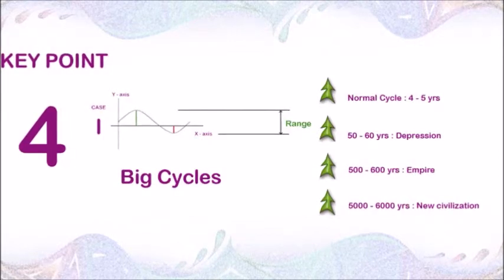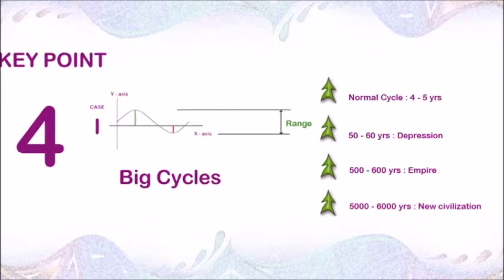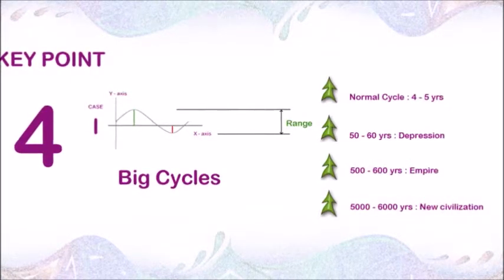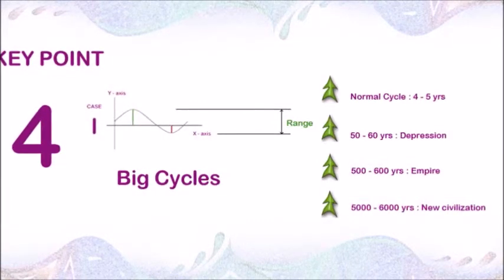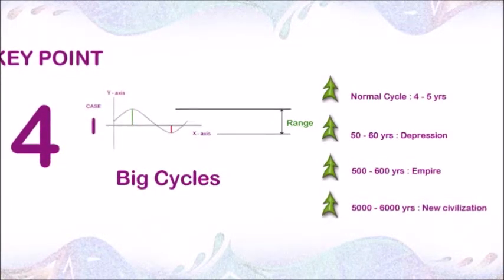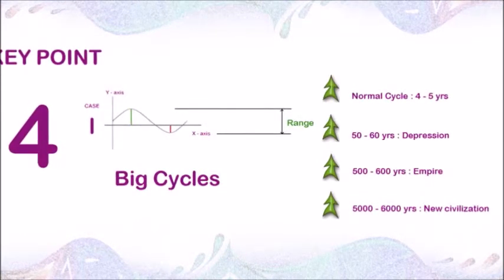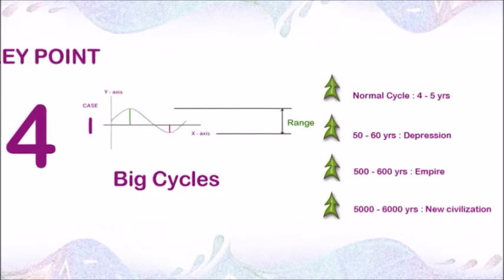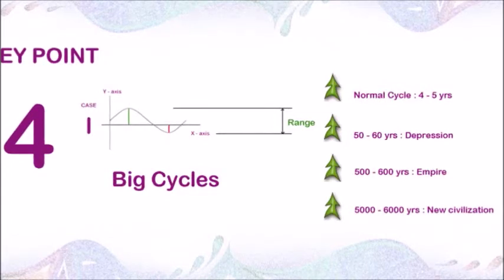Similarly, bigger business cycles give rise to far bigger cycles. Like a 60 year cycle can give rise to a cycle of 500 to 600 years that may bring about change in world order, world history or world civilization. For example, approximately every 50 to 60 years, big depression comes, world currency changes, big wars are fought, and technology changes.